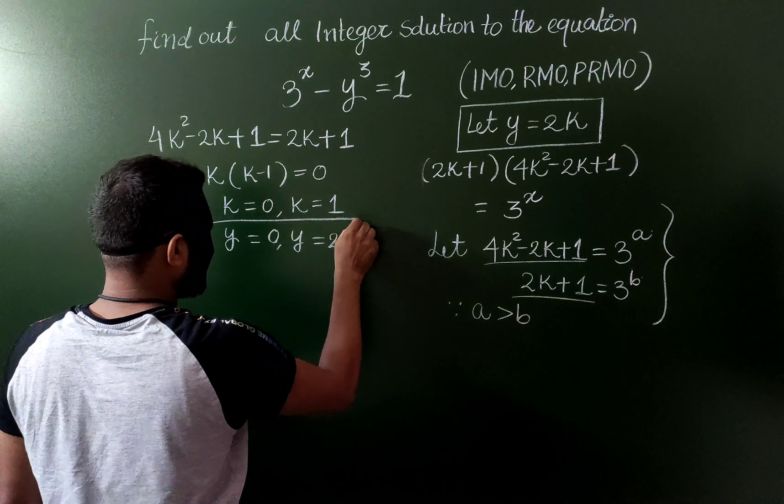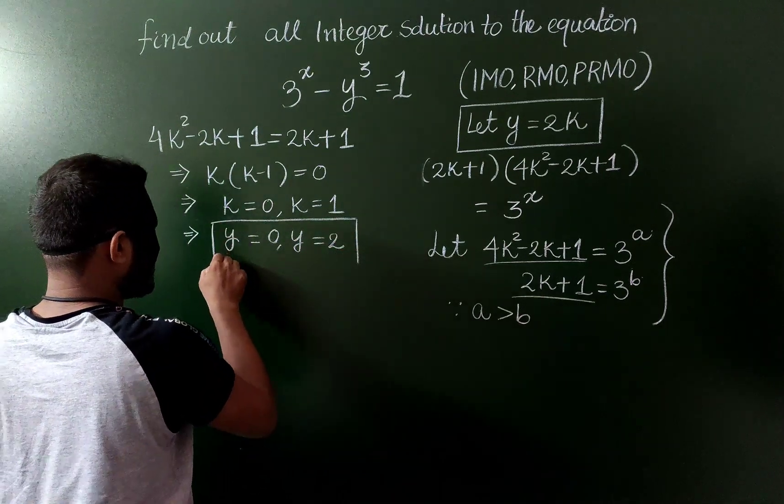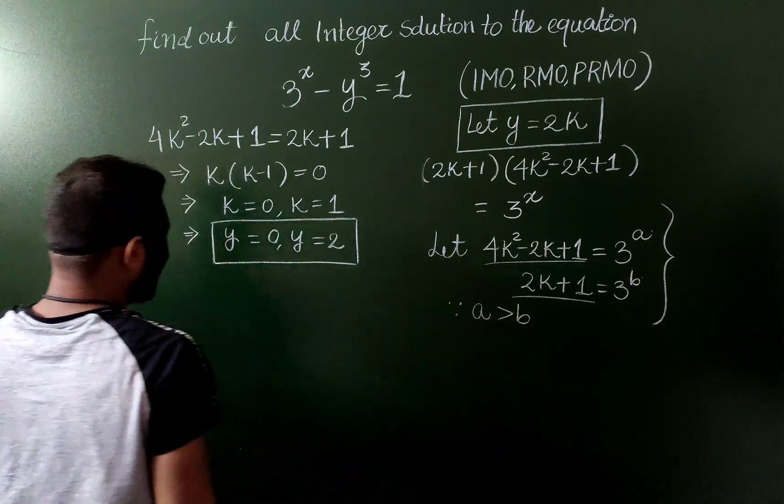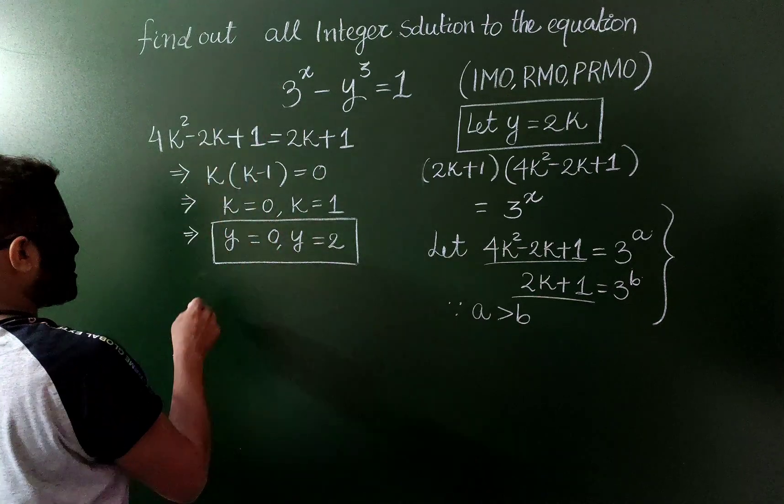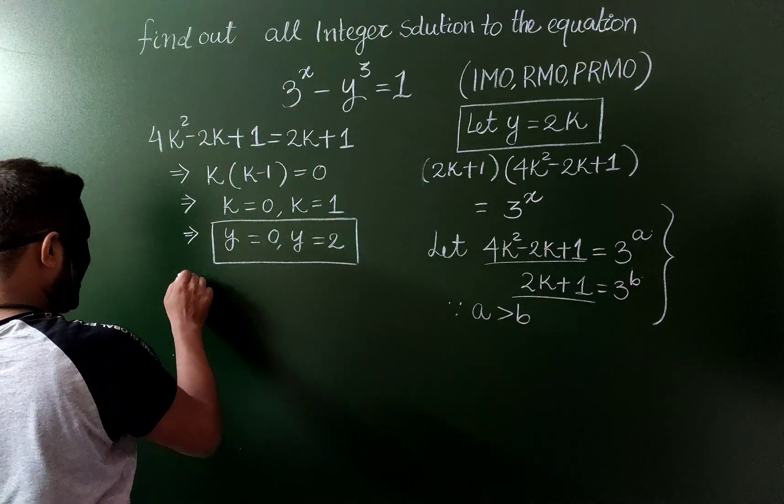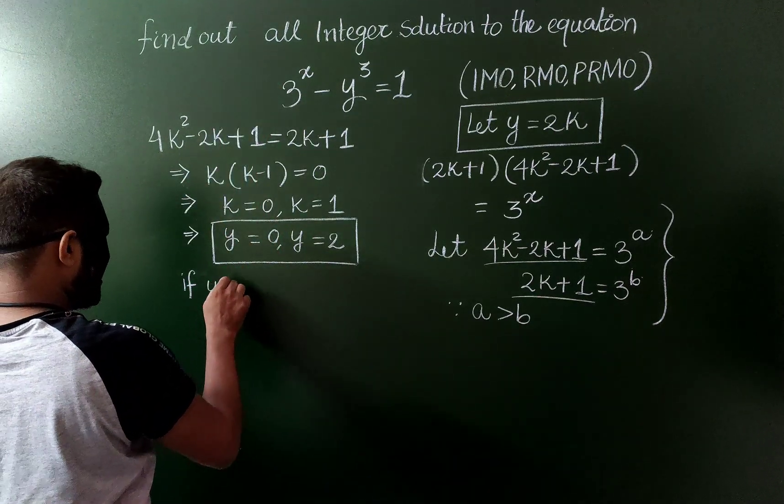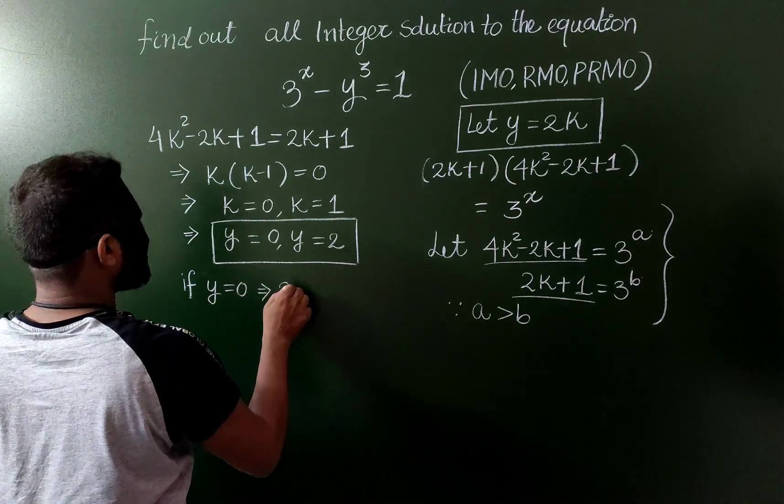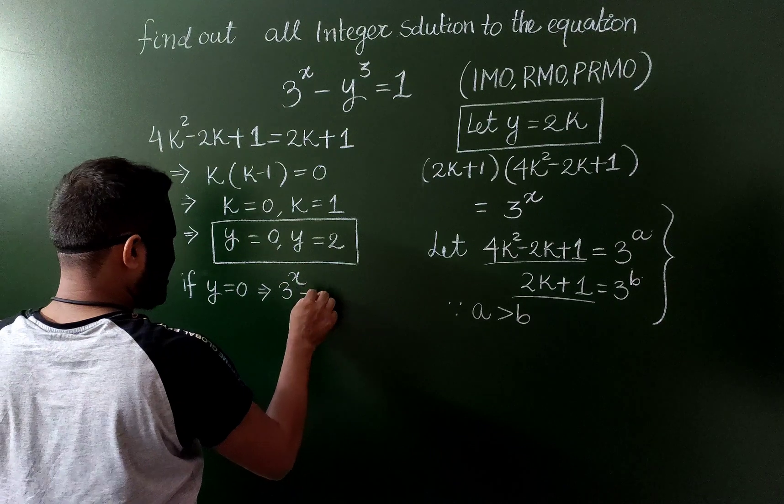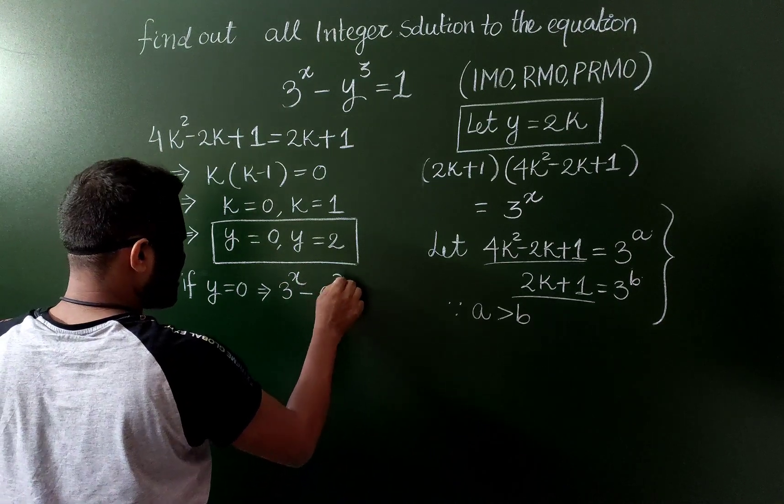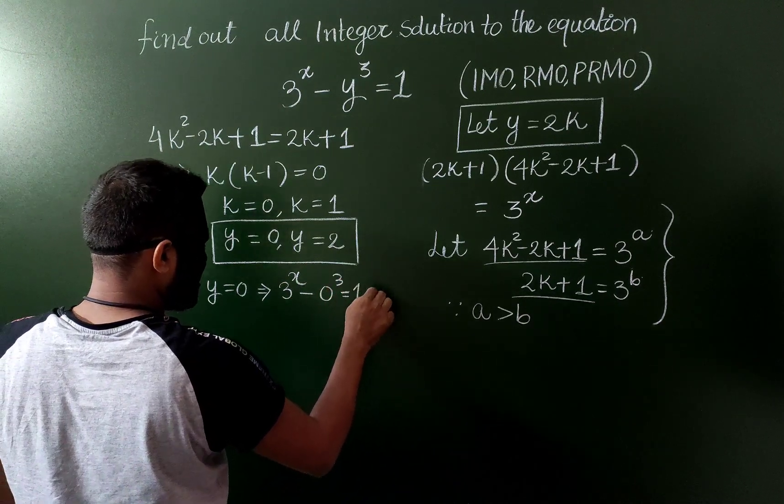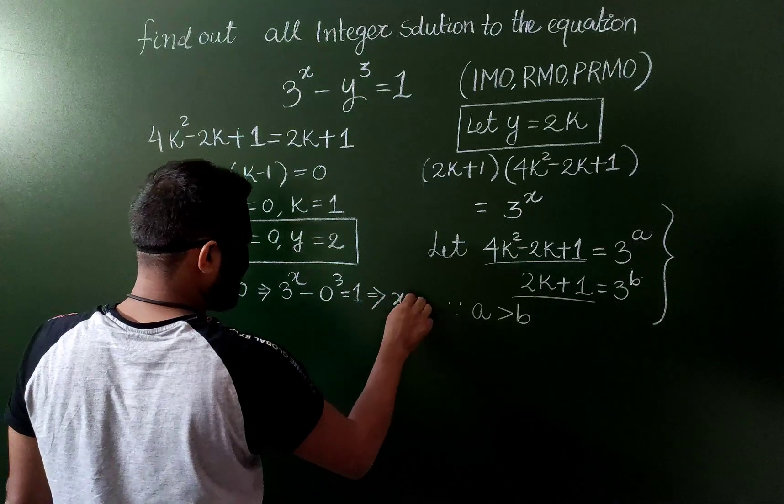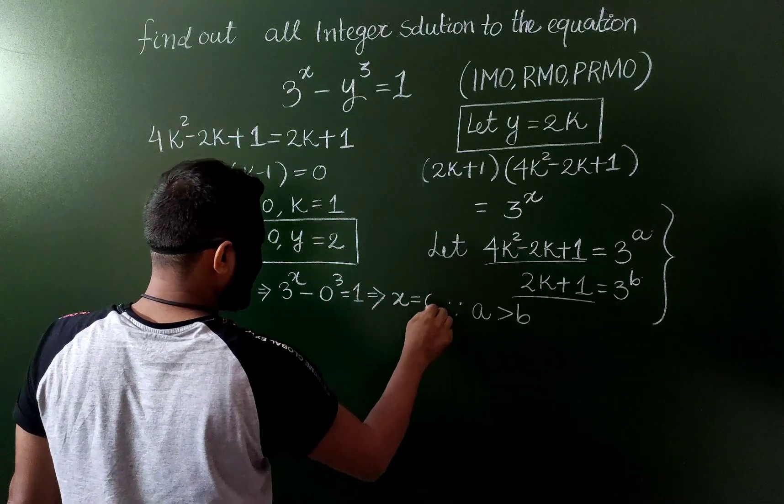Very nice, we got the value of y. Now we have to find the value of x only using the value of 0 and 2 in this equation. If y is equal to 0, then 3 to the power x minus 0 cube is equal to 1, therefore x is also 0.